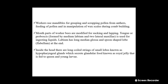The mouthparts of worker bees are modified for sucking and lapping. The tongue or proboscis — formed by the median labium and two lateral maxillae together — is used for ingesting liquids. The labium has a long median glossa and a spoon-shaped lobe called the flabellum at the end. Inside the head are long coiled strings of small lobes known as hypopharyngeal glands, which secrete the glandular food known as royal jelly, fed to the queen and young larvae.